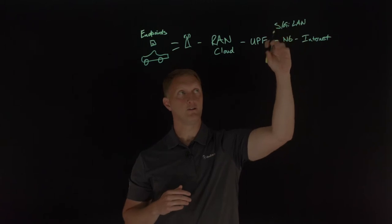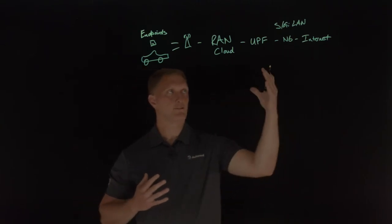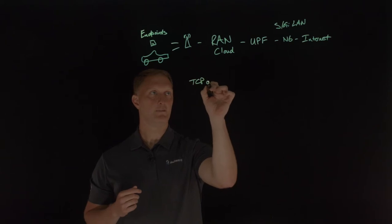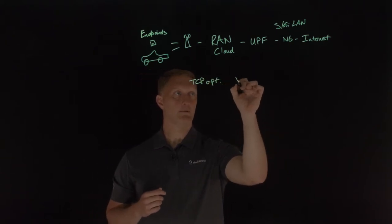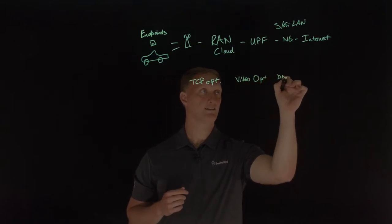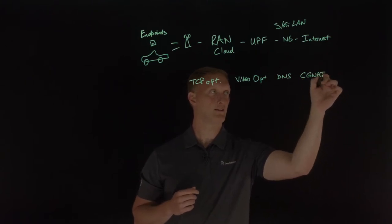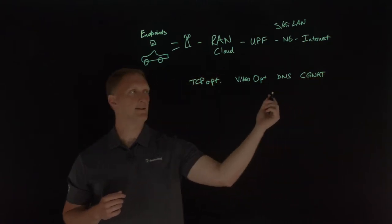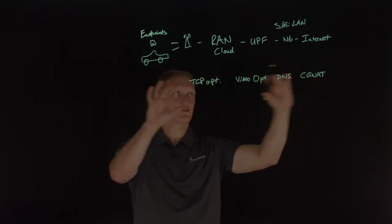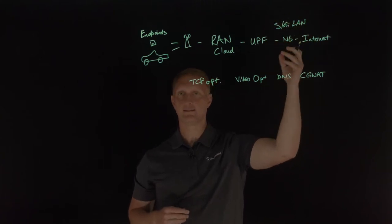because this is where you define the network services that are deployed for these mobile networks, and these services are things like, I'll put a few of them up here, things like TCP optimization, or video optimization, maybe things like DNS, or CG NAT, the carrier grade network address translation, firewalls, those types of things, DDoS, all of those network services are provided here on 4G LTE, on the SGI LAN, or on the N6 interface.